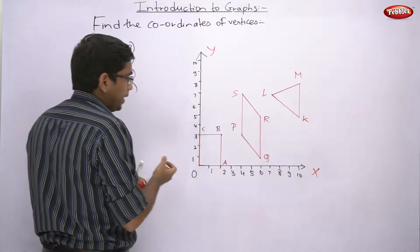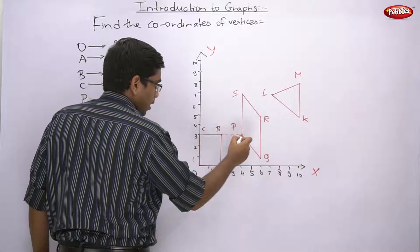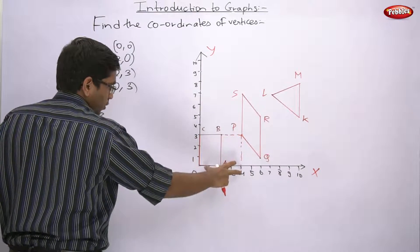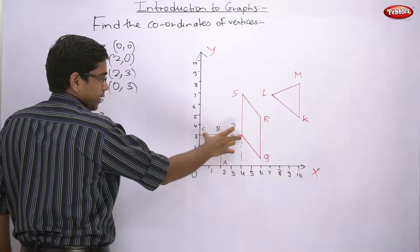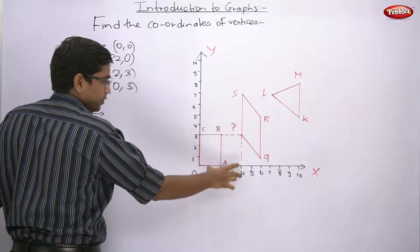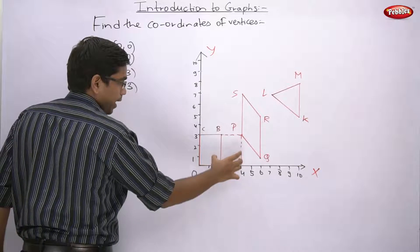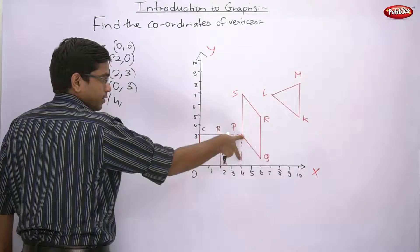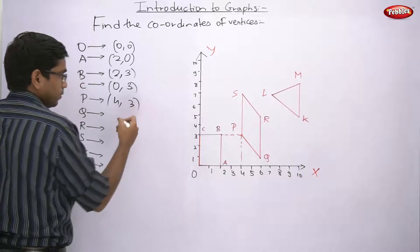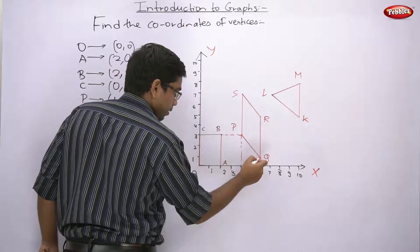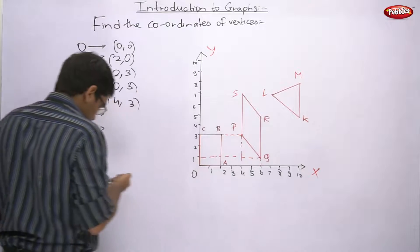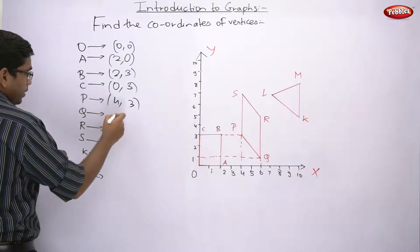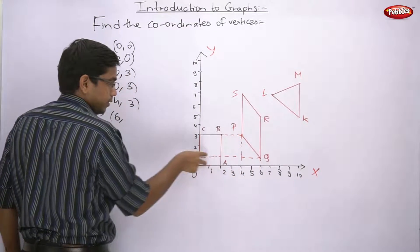Now for P: draw dotted lines horizontal and vertical. The horizontal distance from origin comes to 4 (x-coordinate = 4) and vertical distance is 3 (y-coordinate = 3), so P is (4, 3). For Q: dotted lines show horizontal distance is 6 and vertical distance is 1, so Q is (6, 1). For R: horizontal distance is 6 and vertical distance is 5, so R is (6, 5). For S: vertical distance is 7 and horizontal distance is 4, so S is (4, 7). PQRS done.